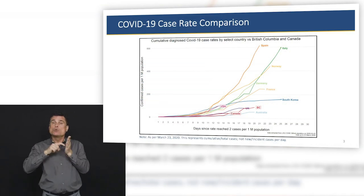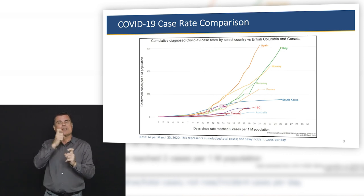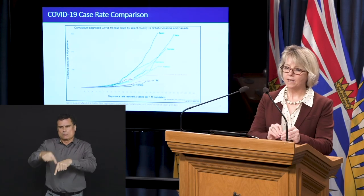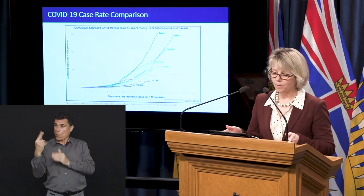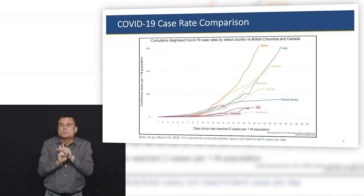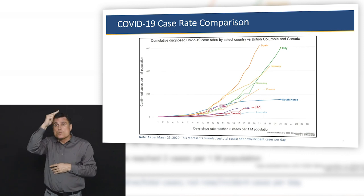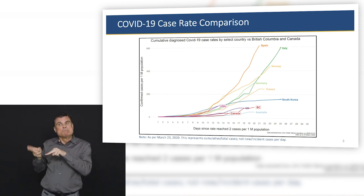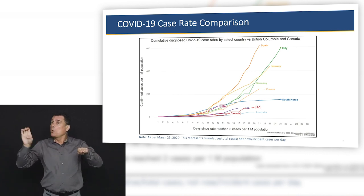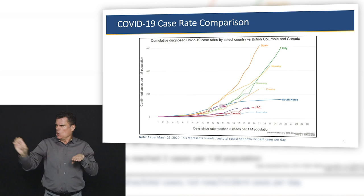This shows what we call a case rate comparison. Rates mean numbers per population, and we're using cases per million, comparing different jurisdictions. We pulled everyone back to when they first hit a rate of two cases per million population, so for BC that's day one. As you can see, the lines for Spain, Italy, Norway, and Germany started to dramatically increase around day seven or eight, whereas BC and Canada have stayed relatively low, though increasing from around day 14.